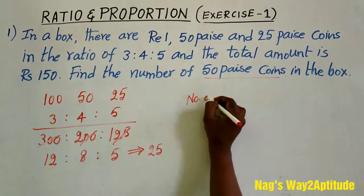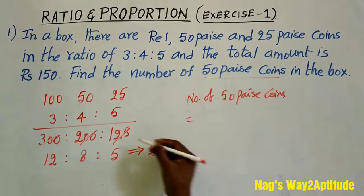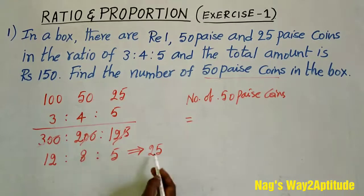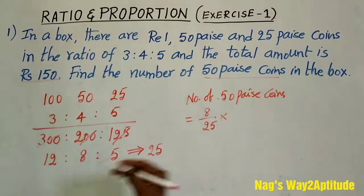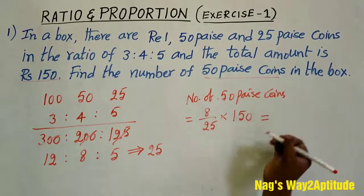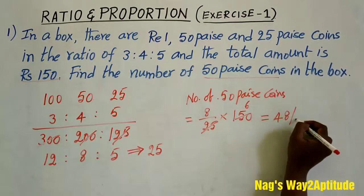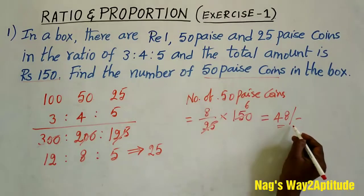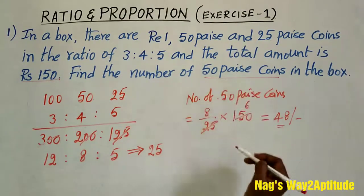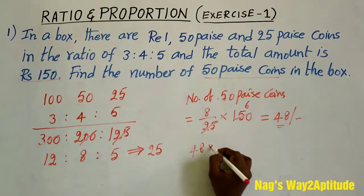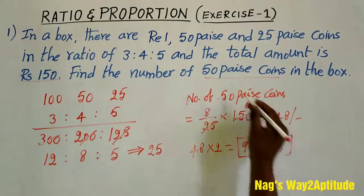The number of 50 paisa coins is equal to: what is the part of 50 paisa coins? It is 8. So you write 8 by 25 into the total amount, which is 150 rupees. That is equal to: 25 goes into 150 six times, and 8 into 6 is 48 rupees. So the value of 50 paisa coins among the total is 48 rupees. Now we need to find the number of 50 paisa coins. We already know in every rupee there are two 50 paisa coins, so in 48 rupees, 48 into 2 is equal to 96 coins. So there are 96 half-rupee coins.